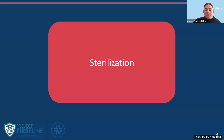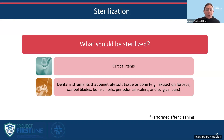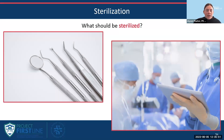Last today, we are going to review sterilization. Sterilization describes a process that destroys or eliminates all forms of microbial life and is carried out in healthcare facilities by physical or chemical methods. Critical items are high-risk for infection — this includes objects that enter sterile tissue or the vascular system, and these items require sterilization. Items that should be sterilized include critical items with higher potential for infection risk, objects that enter sterile tissue or the vascular system, and dental instruments that penetrate soft tissue and bone — such as extraction forceps, scalpel blades, bone chisels, and surgical burrs. In the OR, much of the equipment is invasive and considered a critical item, so most items in the OR require sterilization.